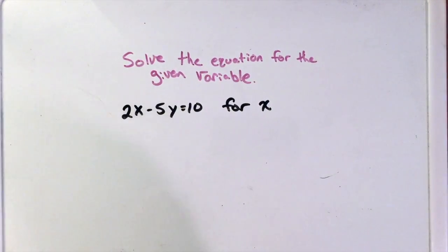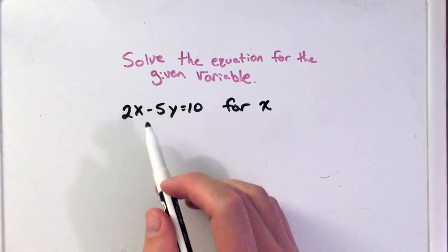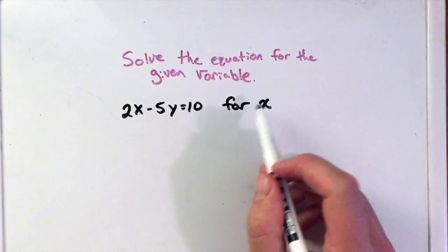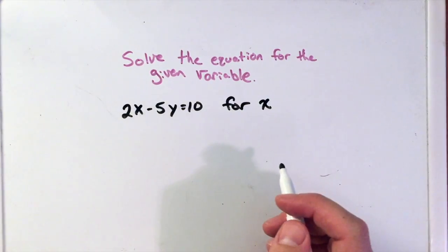So here we want to solve the equation for the given variable. Our equation in this example is 2x minus 5y equals 10 for x. We want to isolate x and get it by itself.